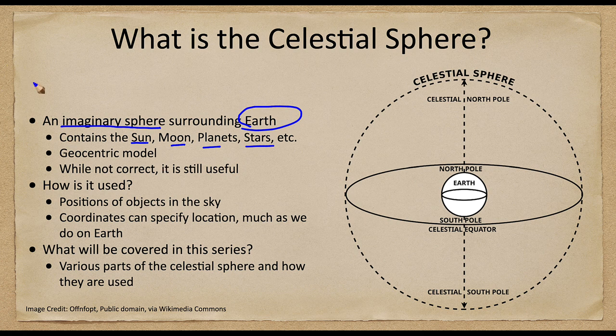Now this dates back to the times of geocentric models, or earth-centered models, where we thought that Earth was the center of the universe. For our purposes here, it is actually still quite useful for describing positions on the sky. We can still use this model even though we know that things in the sky are at vastly different distances — the sun and the moon are a lot closer and the stars are a lot more distant. We can still imagine they're all attached to this great celestial sphere, and it allows us to determine positions of objects in the sky.